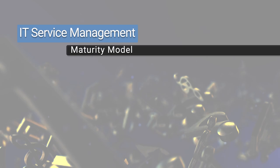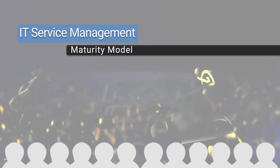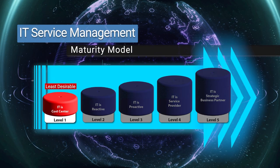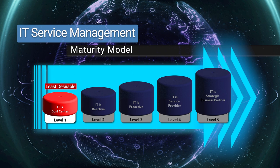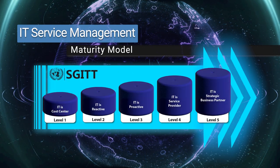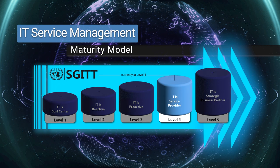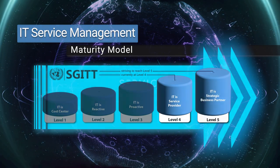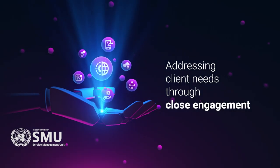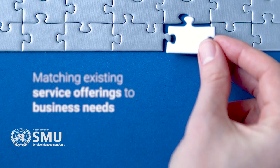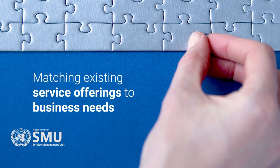The IT service management maturity model shows how the audience sees IT. There are five levels, with level one being the least desirable, where IT is seen as an unavoidable cost. SGIT is currently at level four and striving hard to reach level five — to become a strategic partner for business — by addressing the most pressing needs of clients through close engagement and matching existing service offerings to business needs.